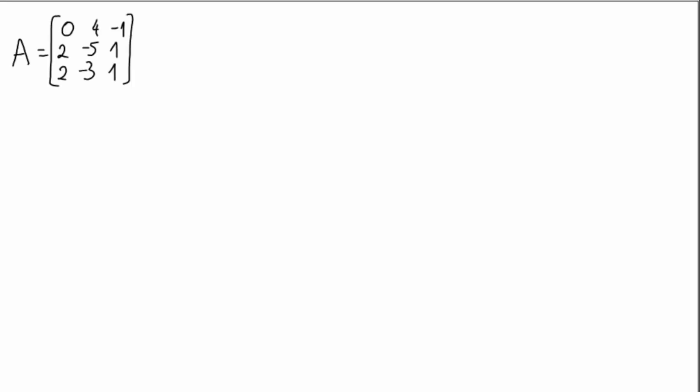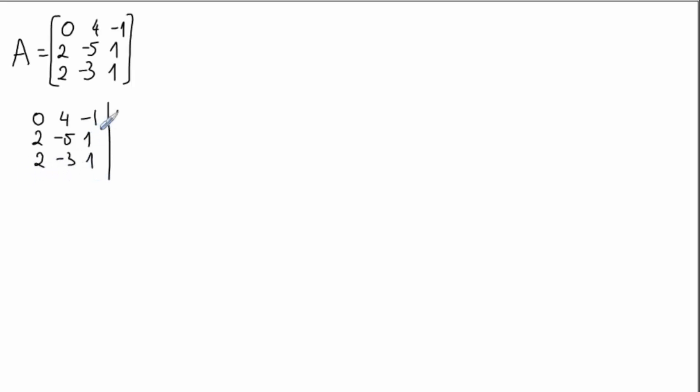We are going to use the Gauss-Jordan method with pivoting to find the inverse of a matrix. This method starts the same as the classical approach — we copy matrix A and attach to it an identity matrix, creating an augmented matrix.